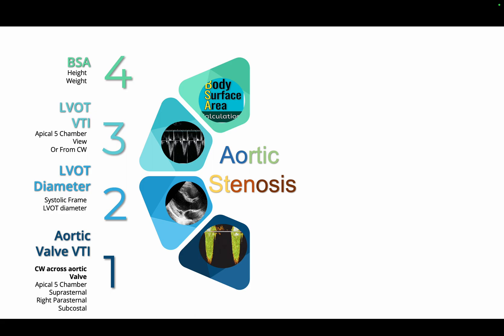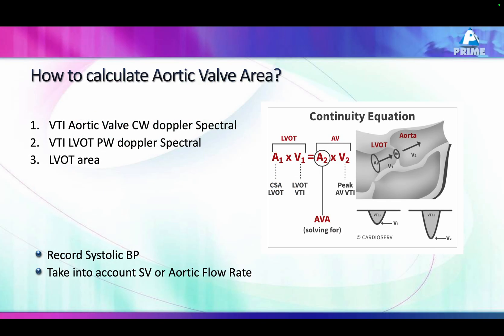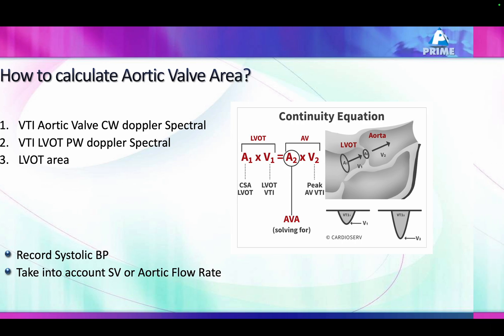The next parameters I will discuss in Part 2. To calculate aortic valve area, we need those four parameters. We take a VTI across the aortic valve, a VTI across the LVOT, and an LVOT area — then using the continuity equation we can calculate the aortic valve area. You must also record systolic blood pressure.